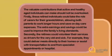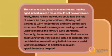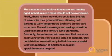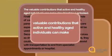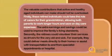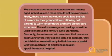The paragraph starts with a sentence that establishes the main point: 'The valuable contributions that active and healthy aged individuals can make should not be overlooked.' This is called the topic sentence. The main idea is the valuable contributions that active and healthy aged individuals can make. The writer then goes on with two sentences that support the main idea by saying what the contributions are.